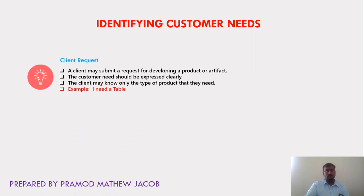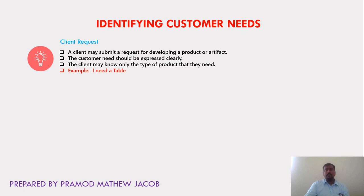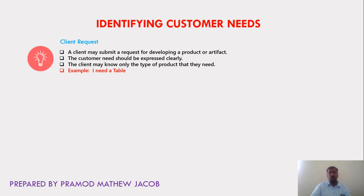The first phase is identifying customer needs. Whenever the customer approaches the developer or designer to develop a particular product, the customer will make a request — it is called a client request. A client or customer may submit a request for developing a particular product or artifact. The customer needs should be expressed clearly; the more the customer expresses his ideas, the better the designer can design or model the product. The client may know only the type of product they need.